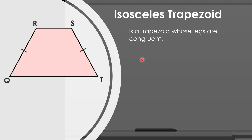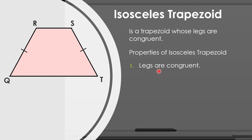Here are the properties of the isosceles trapezoid. First, legs are congruent. As defined, an isosceles trapezoid has legs which are congruent. So, from our figure, we can say that side RQ is congruent to side ST.